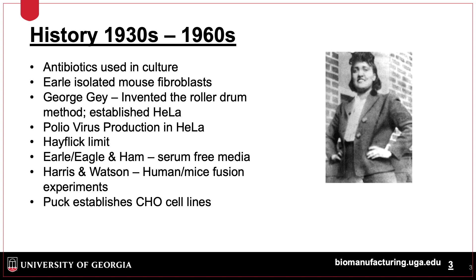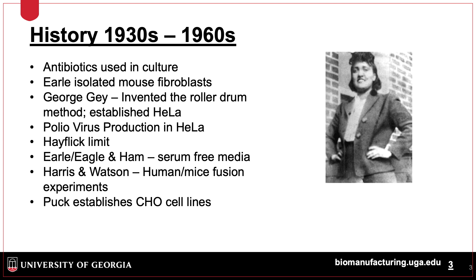Other work included development of media by Earl, Eagle, and Ham, as well as the development of the Chinese hamster ovary, or CHO cell line, which is now the major cell line for production of biological medicines. In the late 70s, Kohler and Milstein developed monoclonal antibodies, which we will talk about later in the presentation.